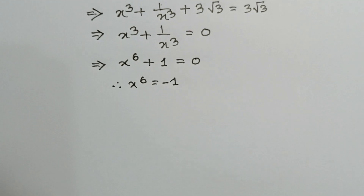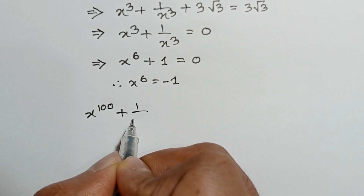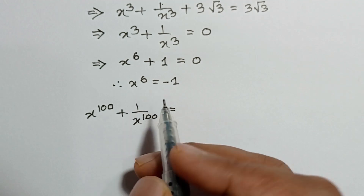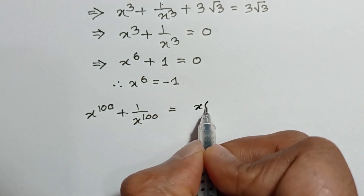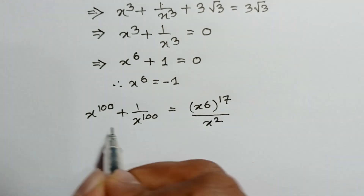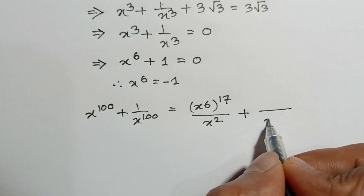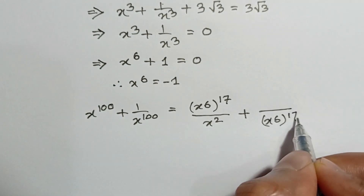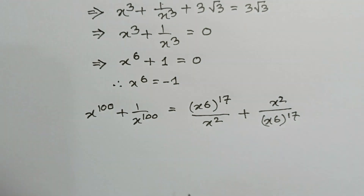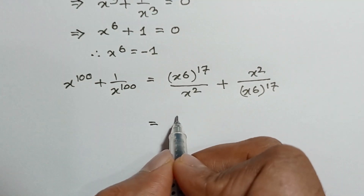Now we can write x to the power 100 plus 1 over x to the power 100. We have found the value of x to the power 6. Since x to the power 6 times 17 is equal to 102, and dividing by x squared gives x to the power 100, we can write x to the power 100 as x to the power 6 to the power 17 divided by x squared. Since x to the power 6 equals negative 1, x to the power 100 equals negative 1 to the power 17 divided by x squared, which equals negative 1.